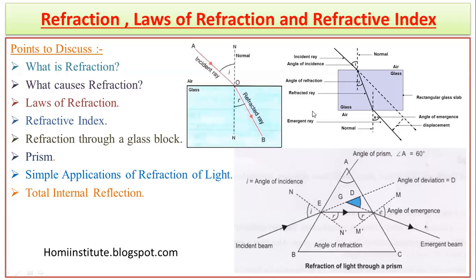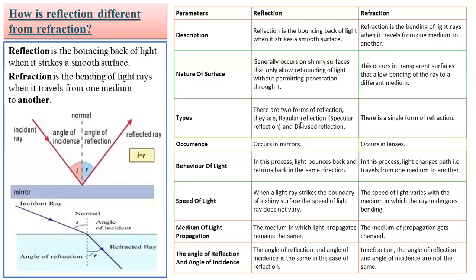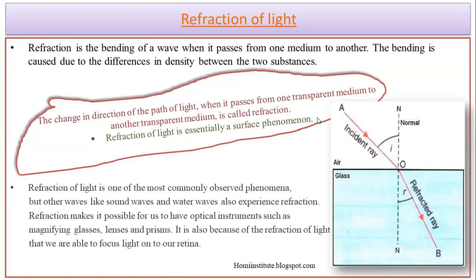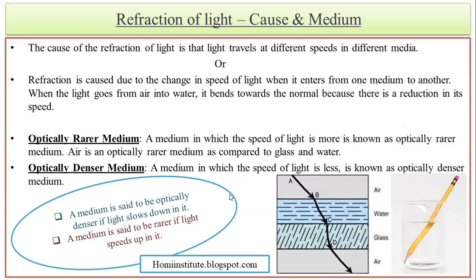Let's start today's class. Yesterday we had started refraction of light, where we saw the basic introduction, what all the things we have to cover in this chapter. We understood what light is, how light rays cause reflection and refraction, and how reflection of light is different from refraction of light. We also covered basic concepts of refraction and some important terms related to it.